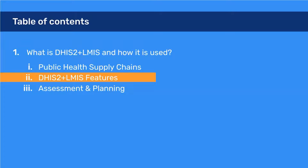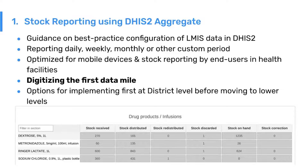Moving on to DHIS2 LMIS features — these are focused on the last mile and the service delivery level, looking to digitize and integrate data into a central eLMIS or ERP. The first feature is stock reporting using the DHIS2 aggregate model. This allows for stock reporting on a daily, weekly, but generally monthly basis, and allows this data to be integrated with a central system.